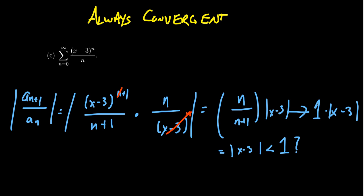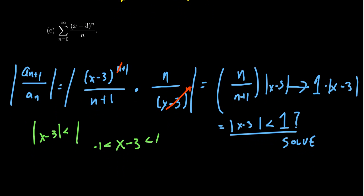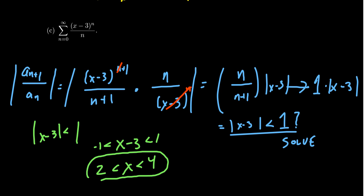We now solve the inequality: the absolute value of X minus 3 is less than 1, which implies negative 1 is less than X minus 3, which is less than 1. Adding 3 to both sides gives 2 is less than X, which is less than 4. This gives us the domain where the power series is convergent: between 2 and 4.